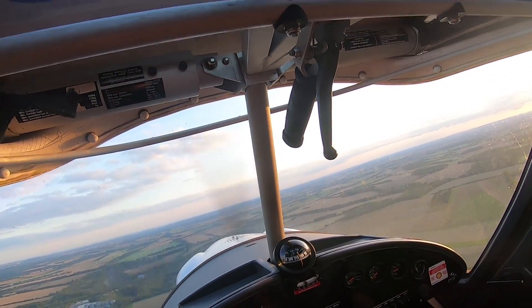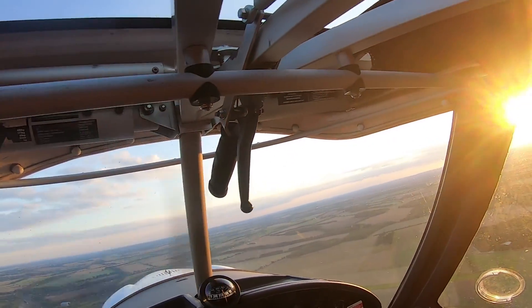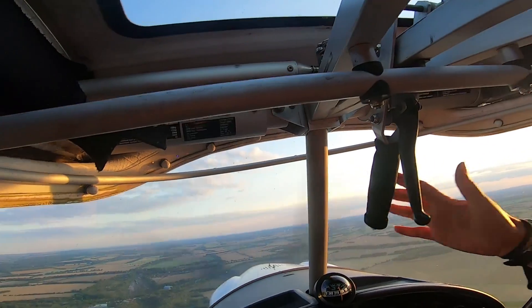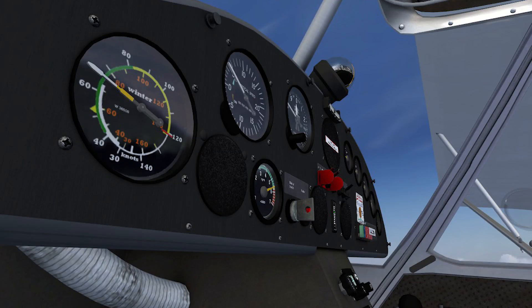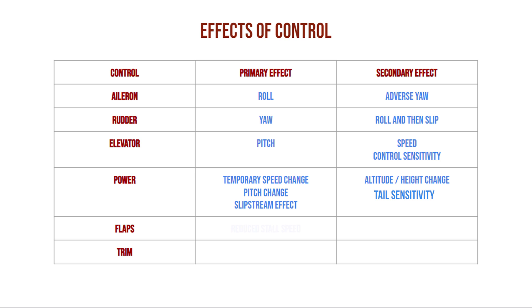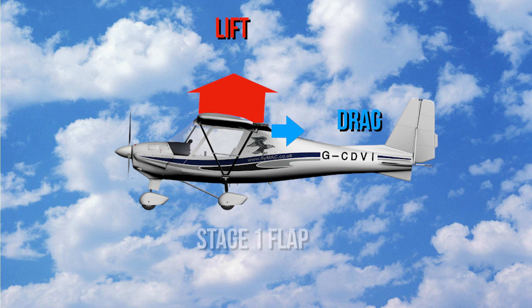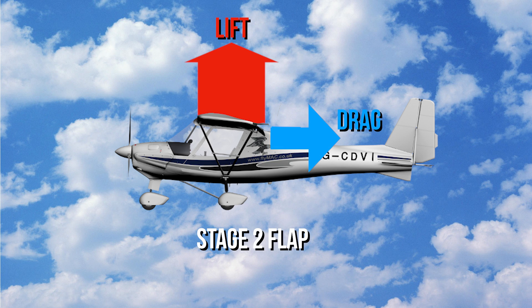Now let's look at the flaps. Above your head is another lever. We have two stages of flap. Flaps must only be used within the white arc of the airspeed indicator. Flaps change the shape of an aerofoil, producing more lift and more drag. They essentially allow us to fly at a slower speed without stalling. We can also fly at the same speed, however we can have a much lower nose attitude.